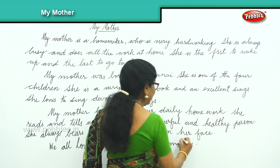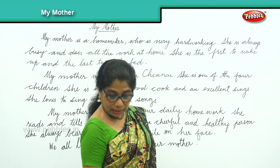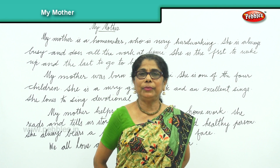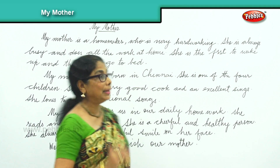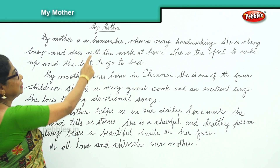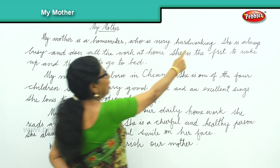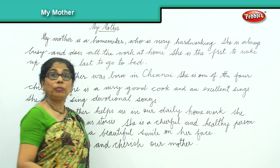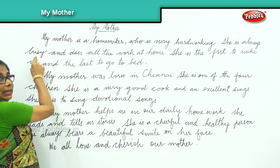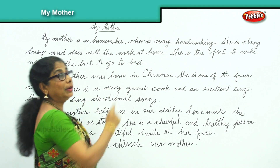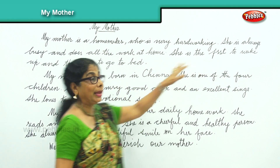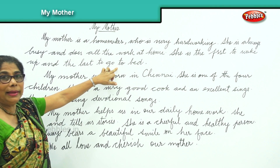So now we learnt how to write a short composition on my mother. When the teacher tells you to write, use short sentences nicely. My mother is a homemaker who is very hardworking. She is always busy and does all the work at home. She is the first to wake up and the last to go to bed.